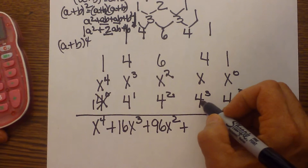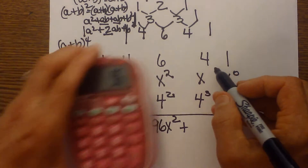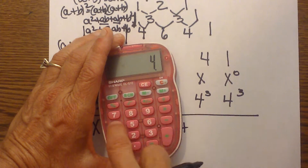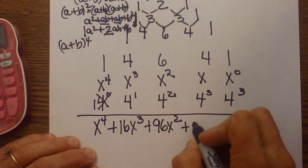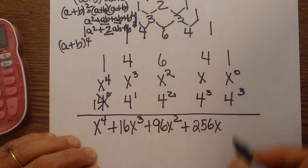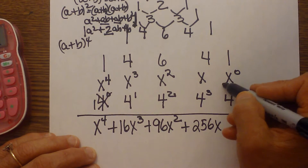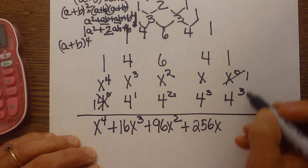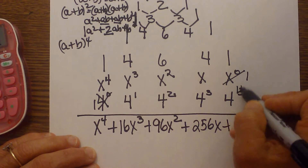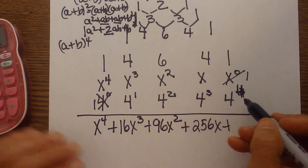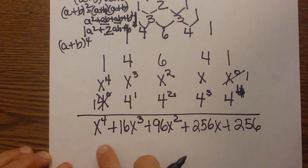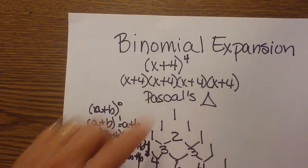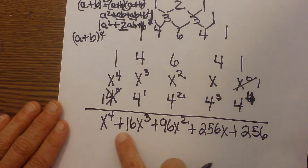The next term is four cubed times four — that's four to the fourth. Four cubed is 64, and times four is 256, so that term is 256x. The last term is one times four to the fourth, which is 256. So the full expansion of x plus four to the fourth power is x to the fourth plus 16x cubed plus 96x squared plus 256x plus 256.